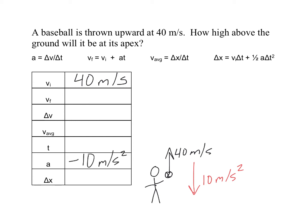And what it's trying to find is how high above the ground it'll be at its apex. So height is a distance and delta x is the only one that measures a distance. So ultimately we're looking for delta x.